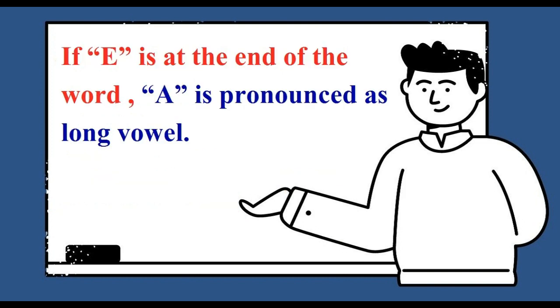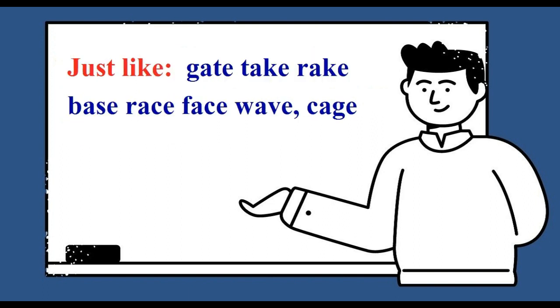If E is at the end of the word, A is pronounced as long vowel, just like: gate, take, rake, base, raise, face, wage, cage.